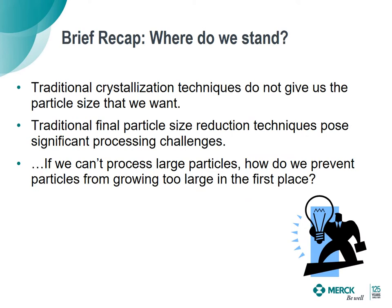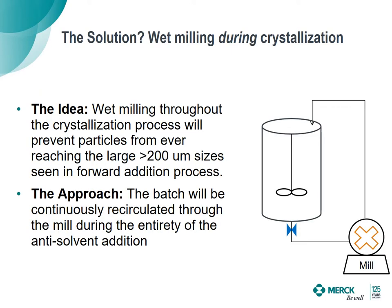Let's briefly recap where we stand. Traditional crystallization techniques don't give us the particle size we want. Traditional final particle size reductions are either too risky — such as dry powder milling — or pose issues at manufacturing scale, such as terminal wet milling. So if we can't process large particles, how do we prevent them from growing too large in the first place? The idea we came up with was to wet mill during the crystallization — perhaps if we continuously milled during the anti-solvent addition, we could prevent those particles from ever getting so large. The approach: start the anti-solvent addition and, throughout its entirety, recirculate the batch through a wet mill in a continuous fashion, as seen in the schematic.